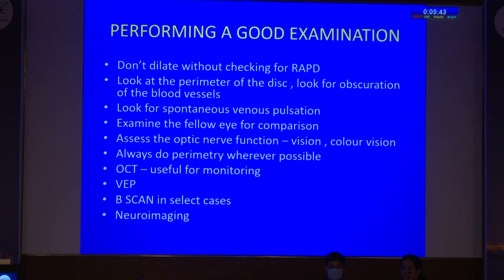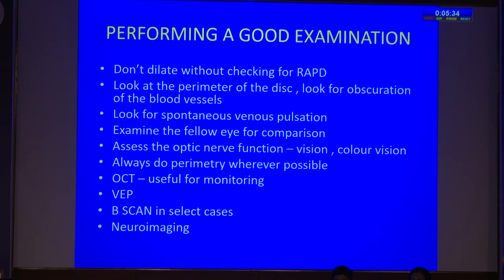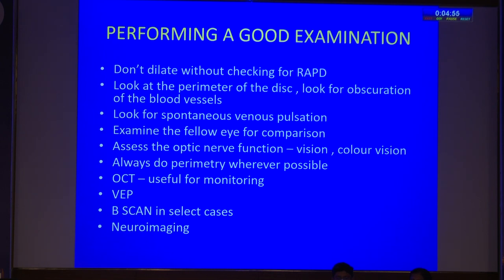When looking at the fundus, look at the perimeter of the disc and check for obscuration of blood vessels. Check for spontaneous venous pulsations. Always examine the fellow eye for comparison — it will give you good clues. For assessing optic nerve function, always check for color vision — I have trained my optometrist that color vision is a mandatory part of the examination irrespective of the history. Always do perimetry wherever possible — even if vision is very less in the affected eye, we still need to do perimetry to document the situation in the other eye. OCT, VEP, B-scan, and neuroimaging are other tools for a good examination.